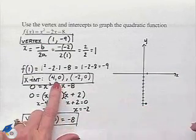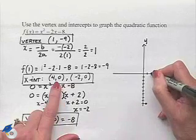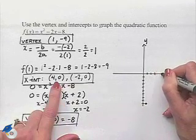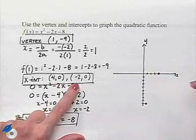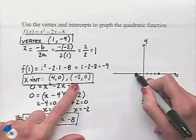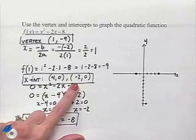We have x-intercepts at (4, 0). So let's go ahead and continue on the x-axis: 1, 2, 3, 4, plot that point. And (-2, 0), so we'll mark off our units and mark our x-intercept at -2.